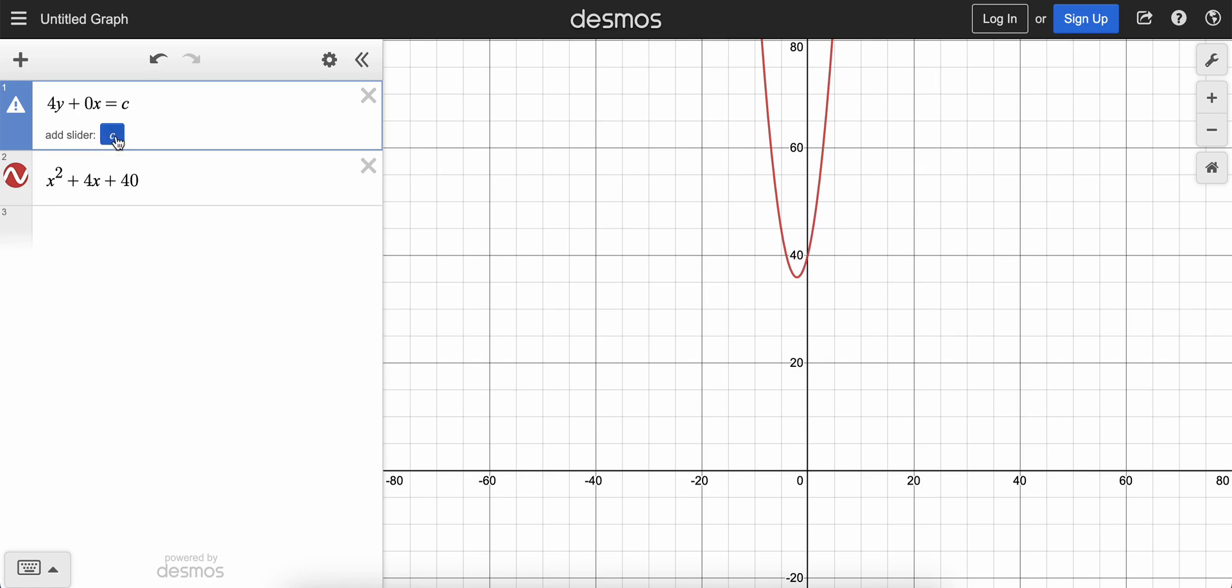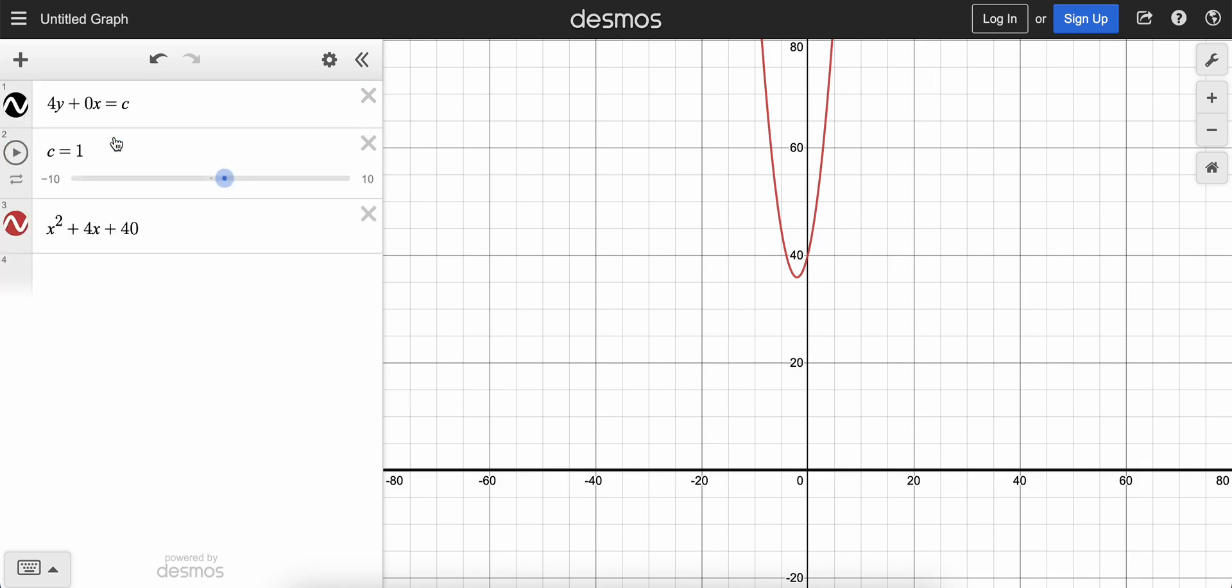But now we want to add this slider. So this is a really important feature in Desmos. We can add a slider, and that'll help us find the value of a missing constant like this one here, c. So we click that button, and you could see that if c is 1, then we're going to get this black line that just popped up. And we can drag this, and you could see that black line moving depending on what the value of c is.